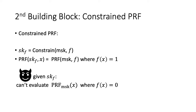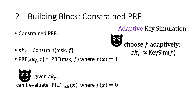Another property we need is called adaptive key simulation. We let the adversary choose a function f adaptively, and there is a procedure called KeySim to generate a simulated key for the function f. It produces a simulated key indistinguishable from the real constrained key. This KeySim procedure only needs to know the function f, the security parameters, and the input/output size of the PRF — no knowledge of any secret key information. Therefore, this procedure can be done by anyone given the description of f, and this will be needed in our encryption construction.